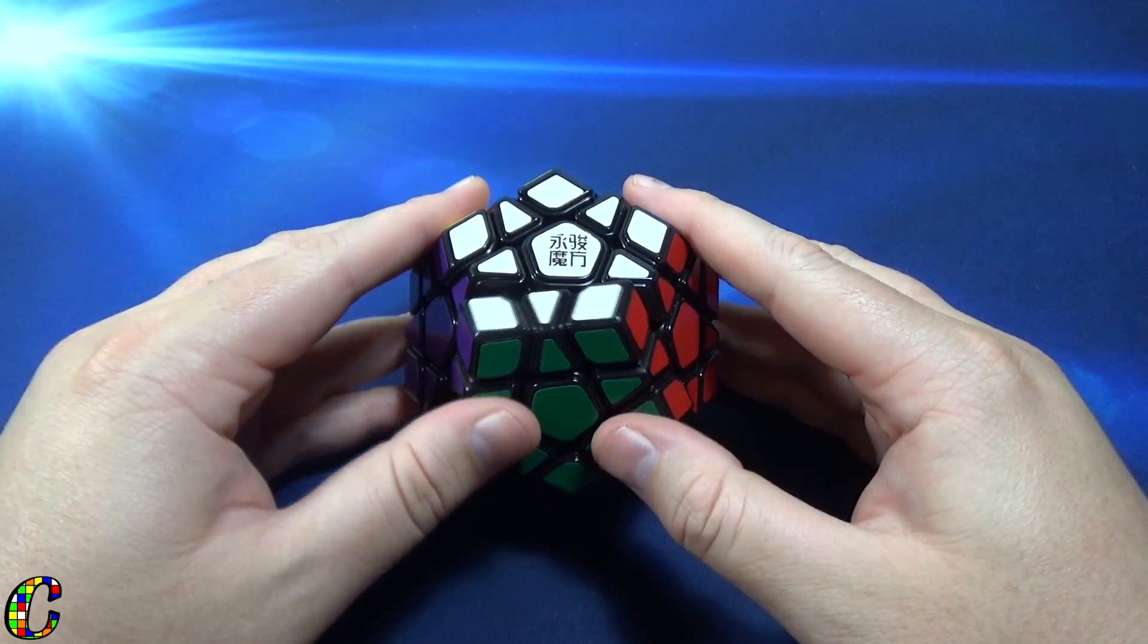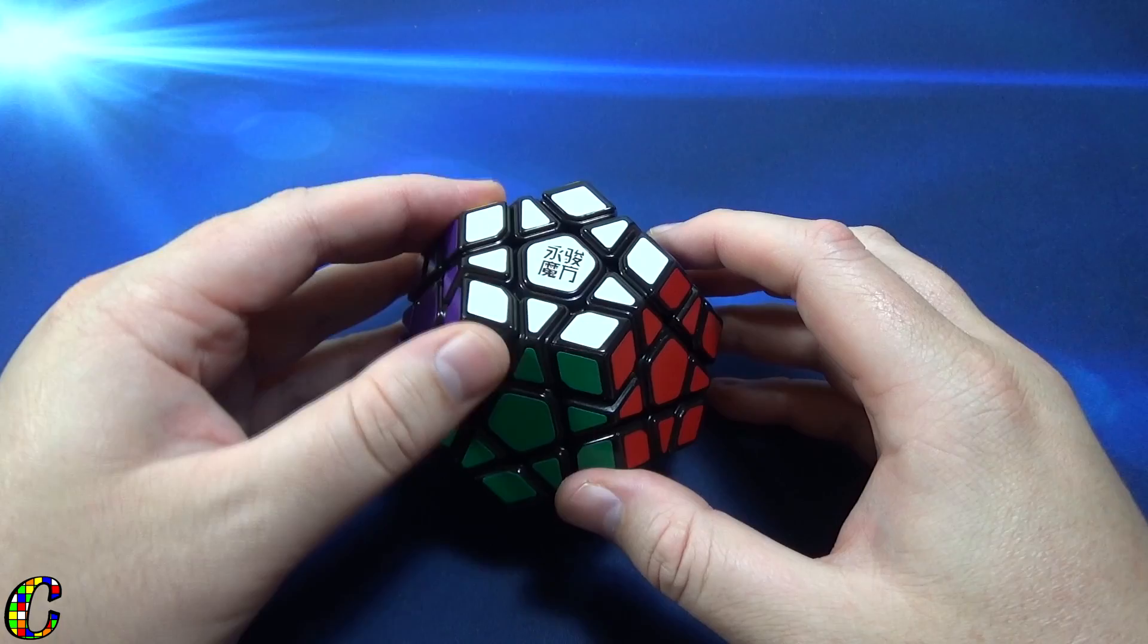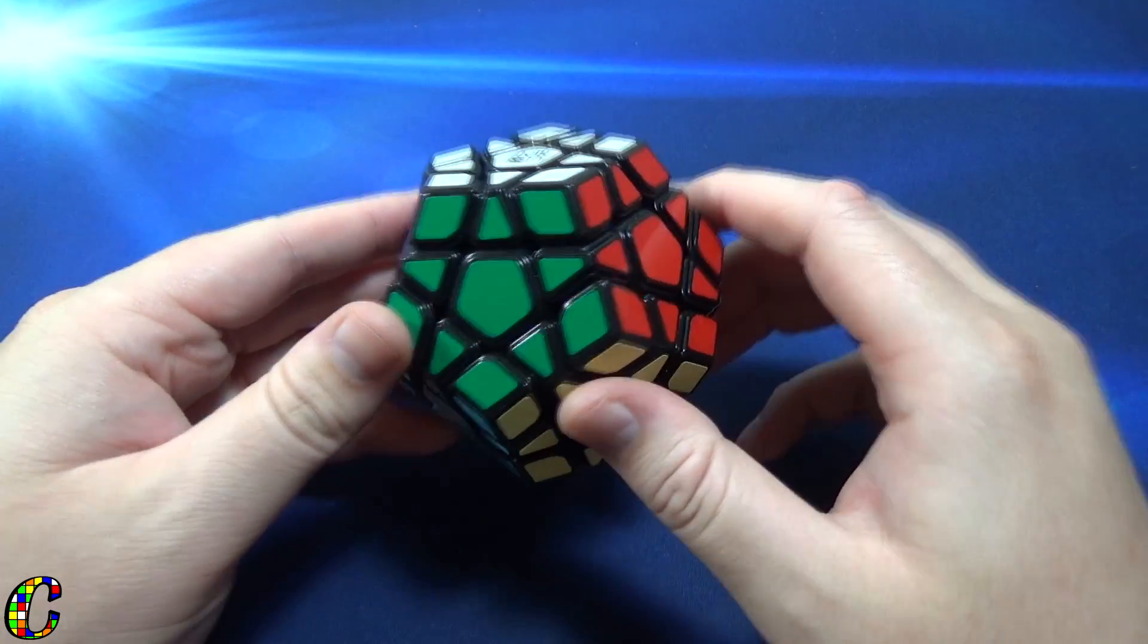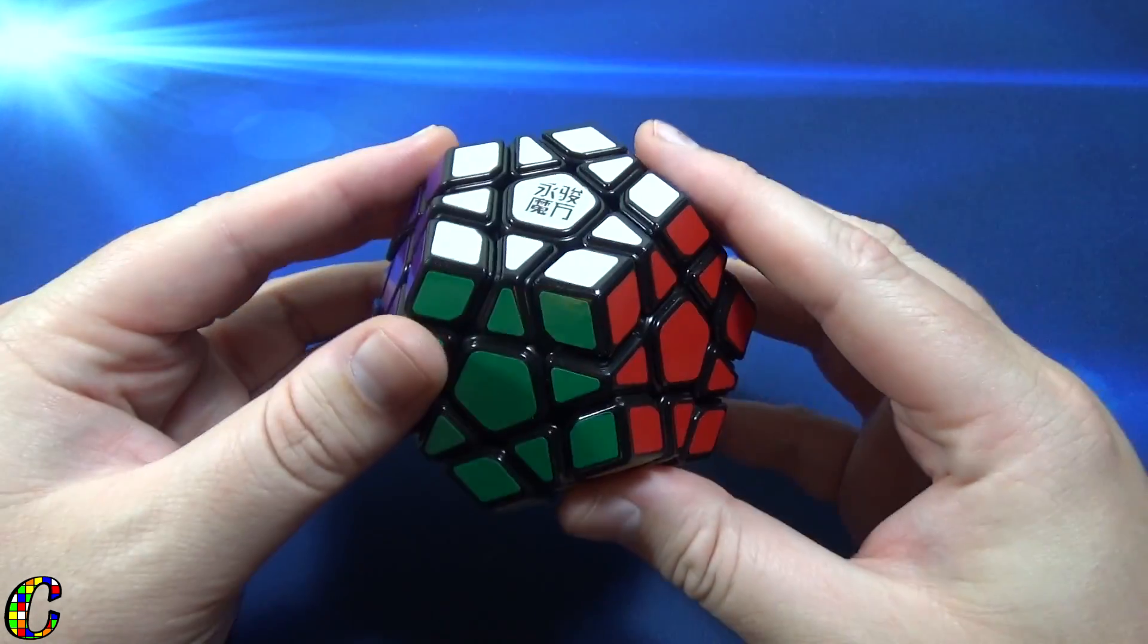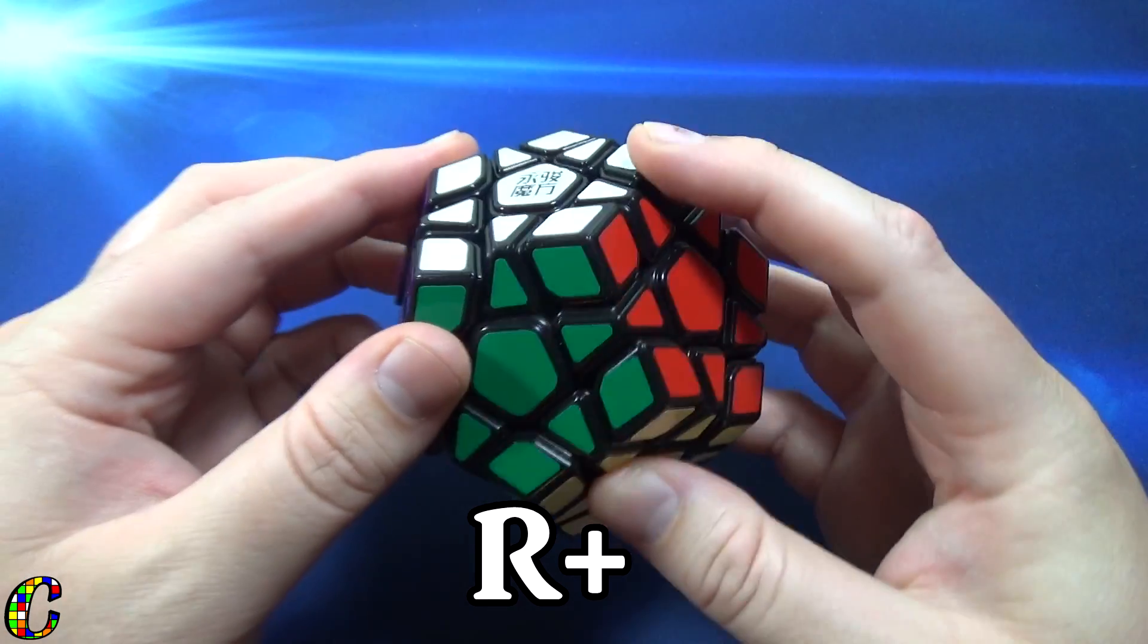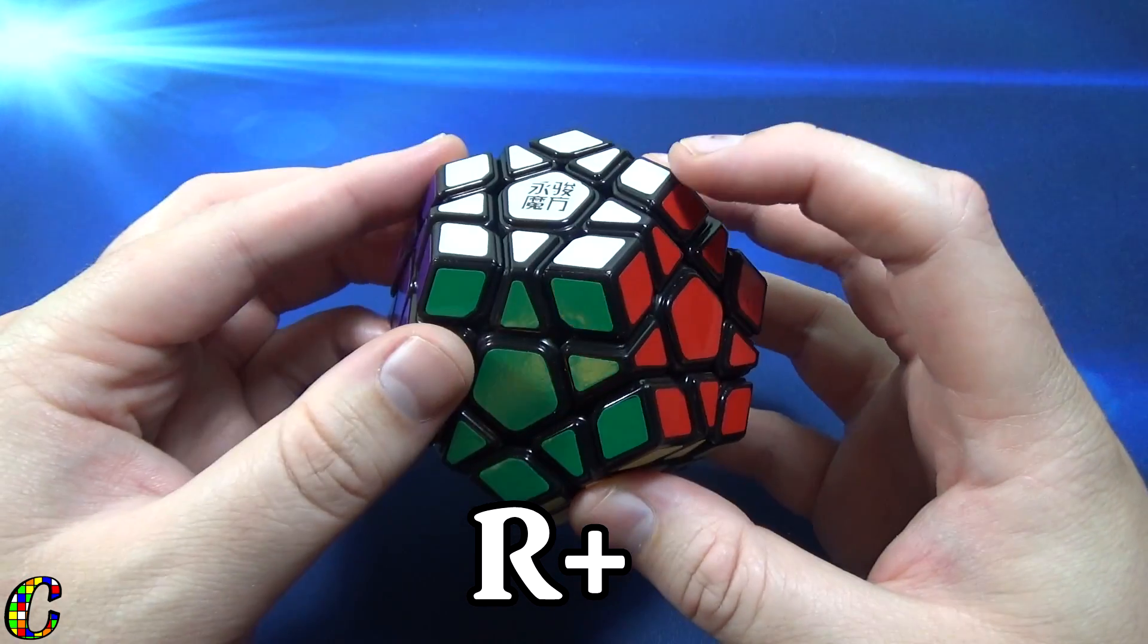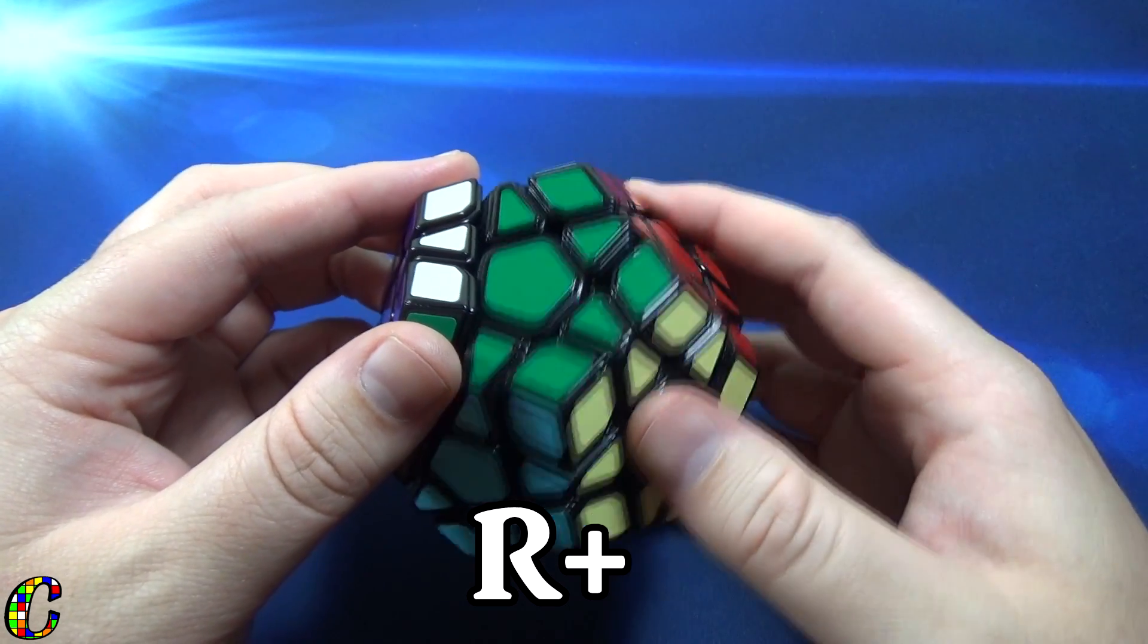What you do is you hold the megaminx like this, and you'll want to hold these two pieces right here. So you hold this bar right here and you're going to be doing one of two moves. This is R+, as you can see it's like a double layer move. You're holding this and turning this. R+, this is R-.